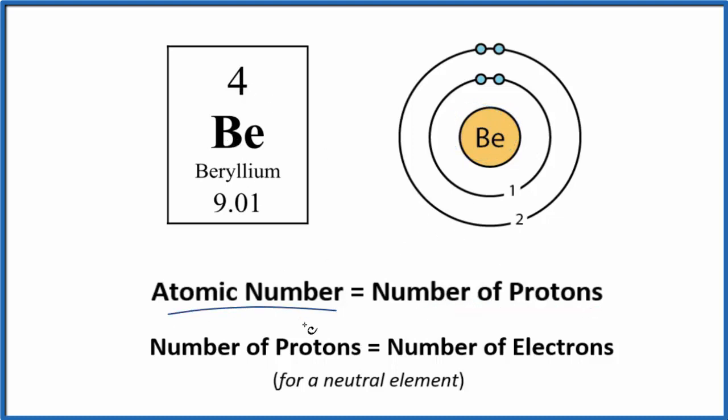We have four protons, and protons equal the number of electrons for a neutral element. All the elements on the periodic table are neutral, so we have four protons and four electrons.